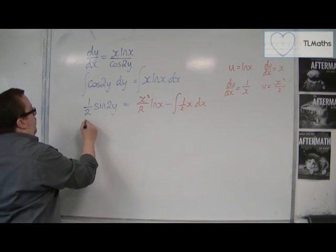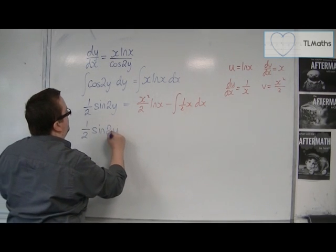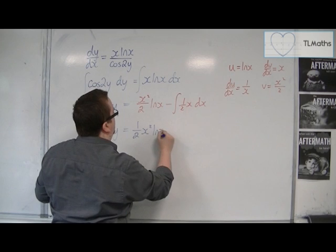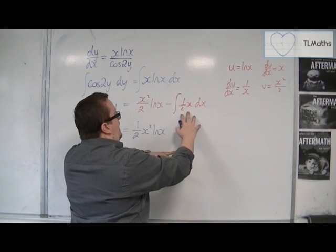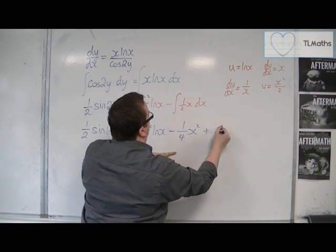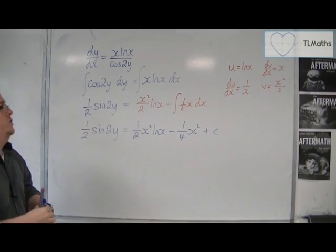So we've got 1 half sine 2y is equal to 1 half x squared log x, and then integrating that, add 1 to the power, divide by the new power, is minus 1 quarter x squared plus your constant C of integration.